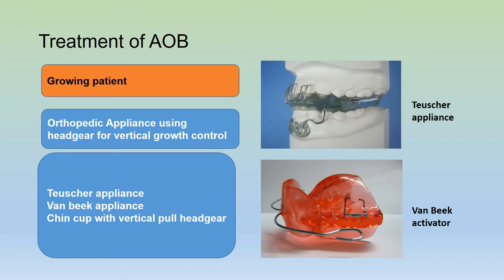In a growing patient where the open bite condition is due to excessive vertical maxillary growth, orthopedic appliances can be used combined with headgear for vertical growth control. Examples of these appliances are the Teuscher appliance, Van Beek appliance, or a chin cup incorporating a vertical pull headgear.